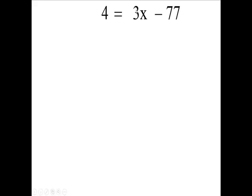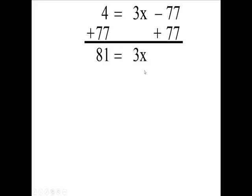Other than the 3, so don't say 3. Other than the 3, what number is by the x? The minus 77. We need to get rid of this number by adding 77 here and here. When you add these, you get 81 equals. Bring down the 3x. Now we're going to get rid of the 3. Now you get rid of the coefficient.